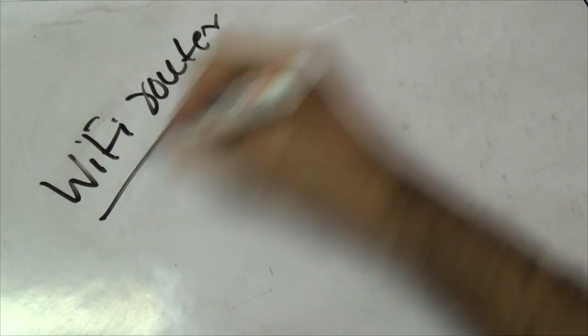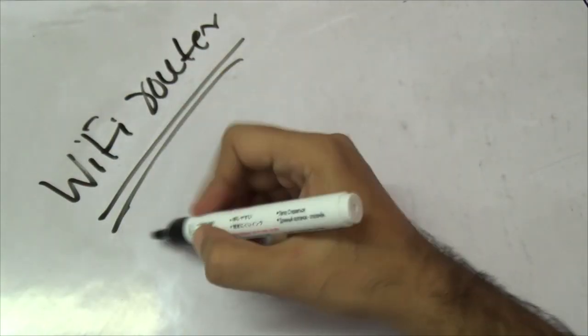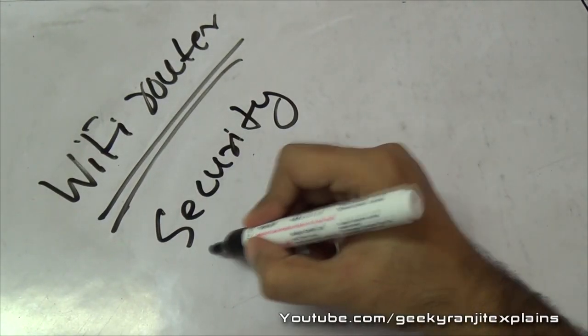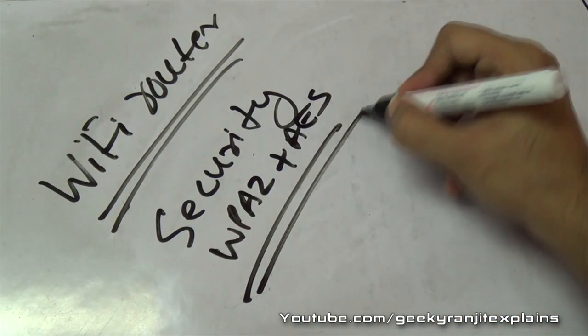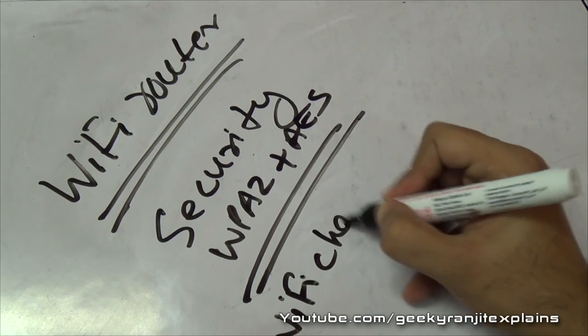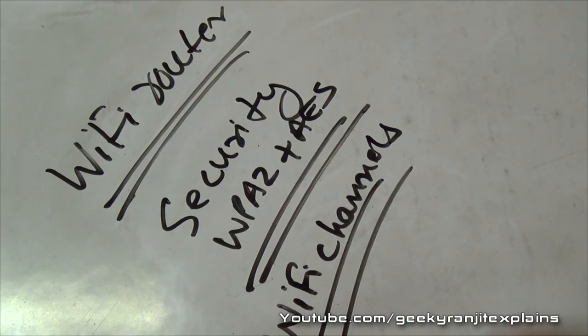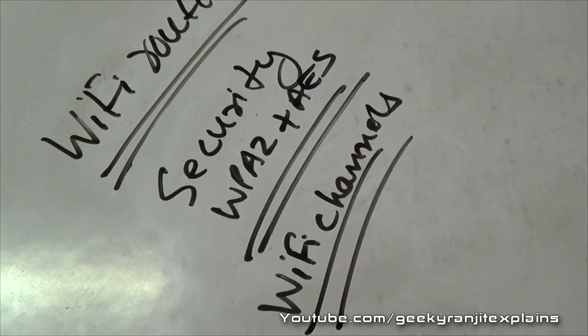I hope you now have a better understanding about Wi-Fi routers, security, you need to secure your Wi-Fi connection. Ideally I would say WPA2 plus AES encryption is the best. About Wi-Fi channels and how to actually locate the best channel in your area using a free app like the one I showed.